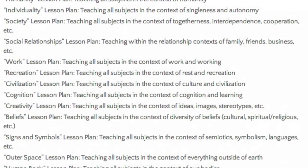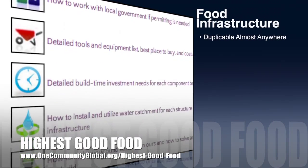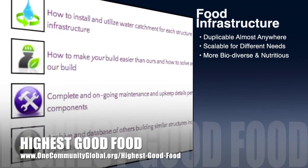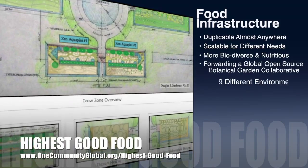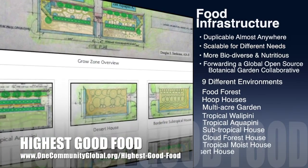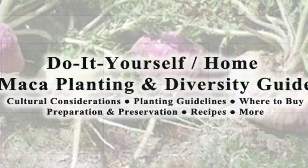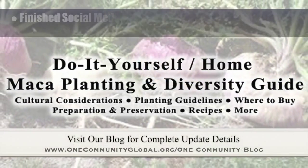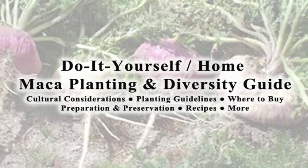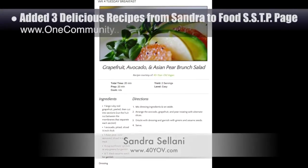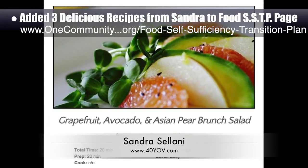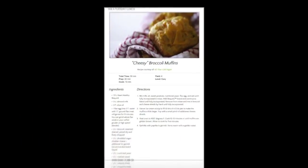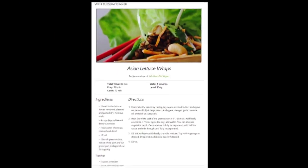One Community's approach to highest good food is duplicable almost anywhere, scalable for different needs, more biodiverse and nutritious, part of forwarding a global open source botanical garden collaborative, and includes nine different free shared and duplicable growing environments. This week the core team finished the final social media imagery and featured our open source maca hub. We also added three additional recipes from Sandra Salani, vegan chef and author of 'What's Your BQ,' to the food self-sufficiency transition plan: Asian brunch salad, broccoli cheese muffins, and Asian lettuce wraps.